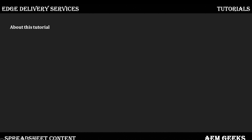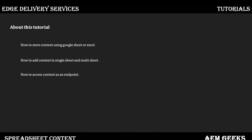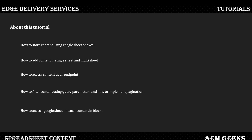As part of this tutorial, I'll talk in detail about how to store content in Google Sheet or Excel, covering different scenarios — if you have a single sheet or multiple sheets in the same file. We'll see how that endpoint serves JSON content, and how you can use query parameters like offset and limit to access specific content and implement pagination in Franklin Block or a third-party system.